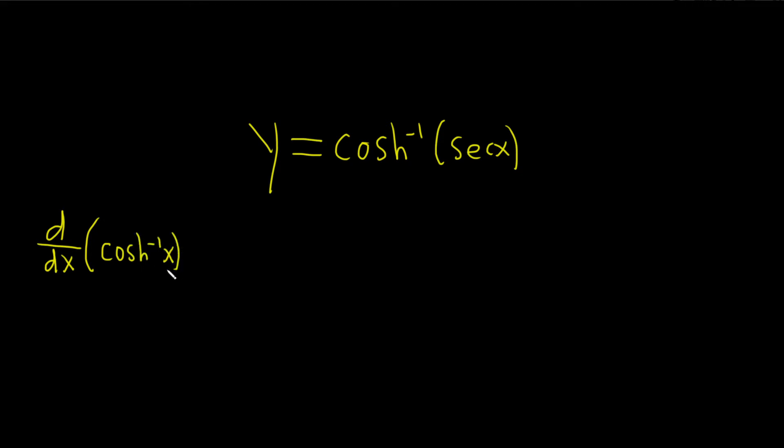So if you're taking this derivative, the formula that you can use is 1 over the square root of x squared minus 1. This is the formula that you can use for a problem like this.